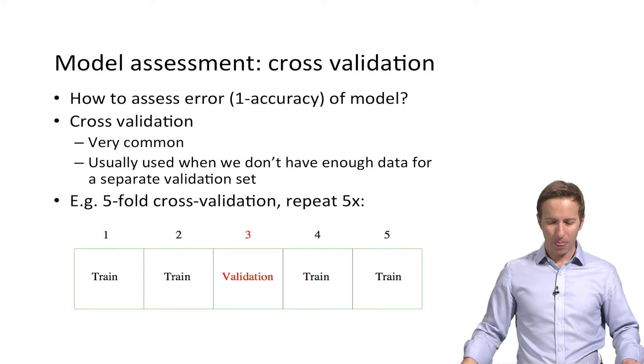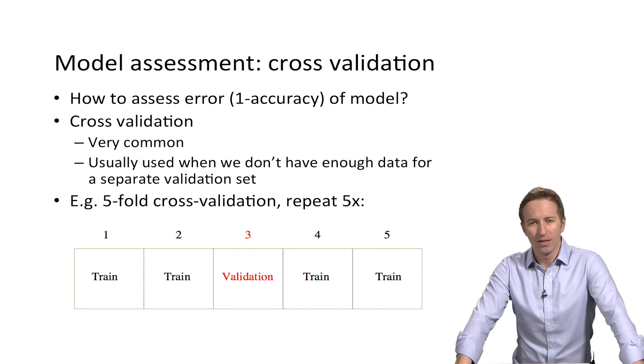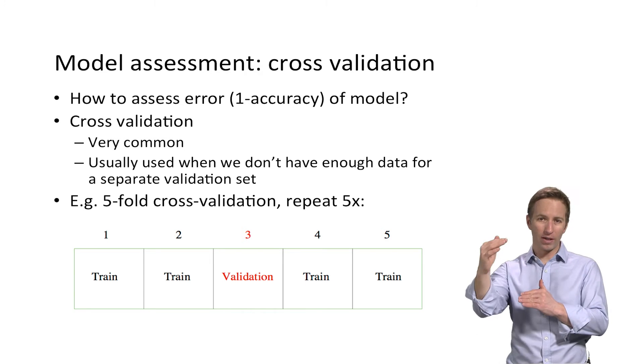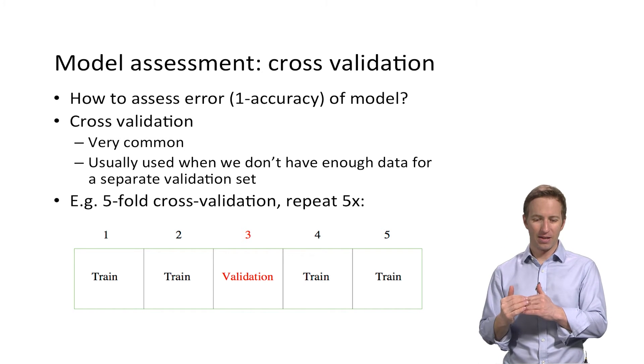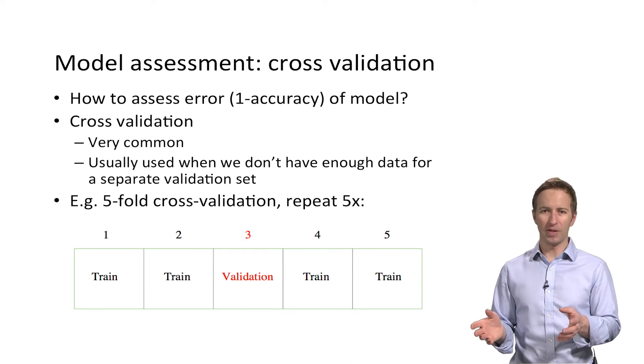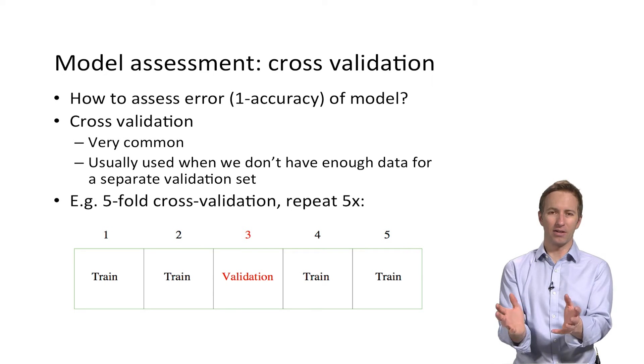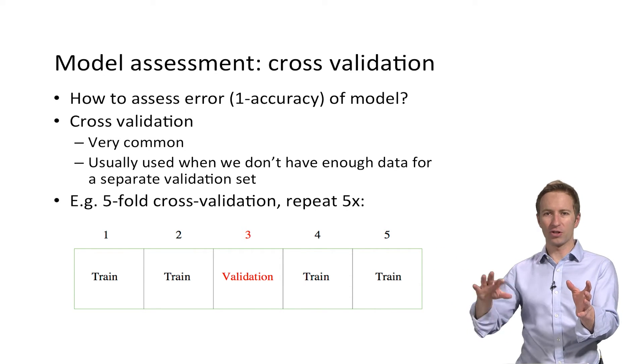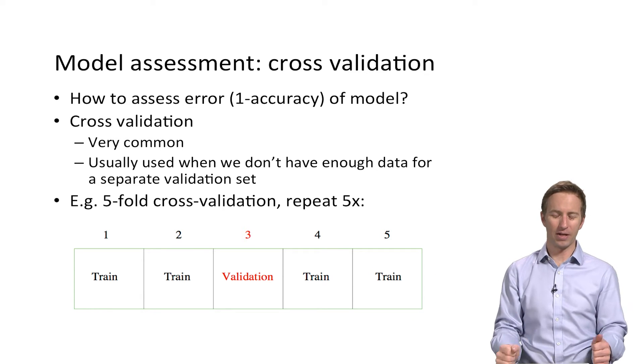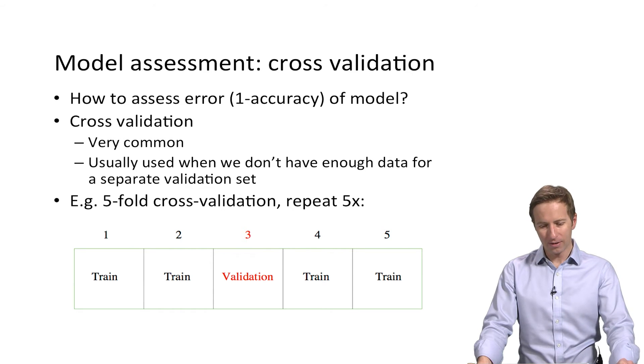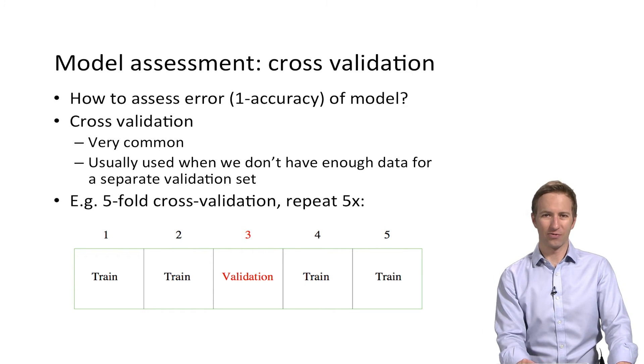Now, how do we assess the accuracy of a model? So it's extremely important to have some holdout data that you're able to try the model out on. And the most common way to do this, well, a nice way to do it would be if you actually had a whole separate part of your data that you could just leave alone until you've finished training the model. And then you could see how accurate it is. But often in biological data sets, we don't have that many data points. So instead, what we do is cross-validation. It's a very common approach.